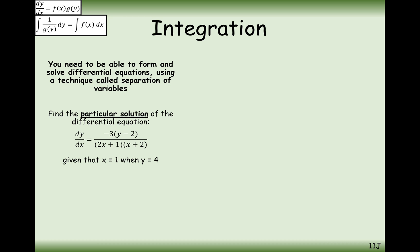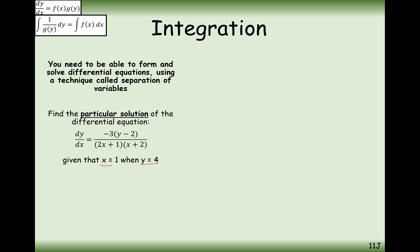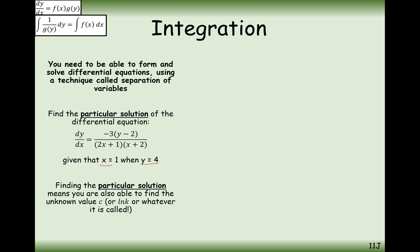Next question: find the particular solution of the differential equation when x equals 1, y equals 4. What we found previously — sine y equals k times (1 + x²) to the power of a half — is called the general solution, because we don't know what k is. If we were given a coordinate we could work out k. When we do have a coordinate that we know our solution goes through, we can work out the value of k, and that gives us the particular solution.